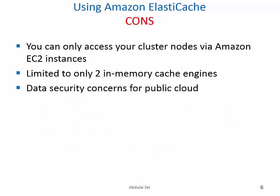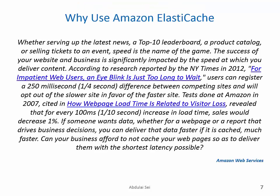Now let's take a look at some of the problems. With Amazon ElastiCache, you can only access your cluster nodes from an Amazon EC2 instance — that's a limitation. There are also only two in-memory cache engines supported, and there are many others out there. There are also data security concerns for putting data in a public cloud. This is the case made by Amazon Web Services for ElastiCache and why you would want to use it.